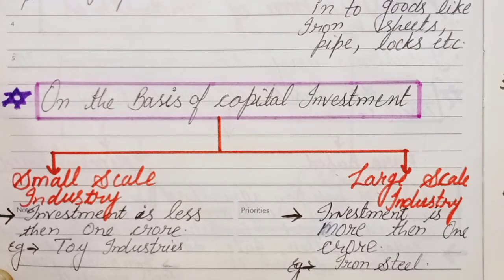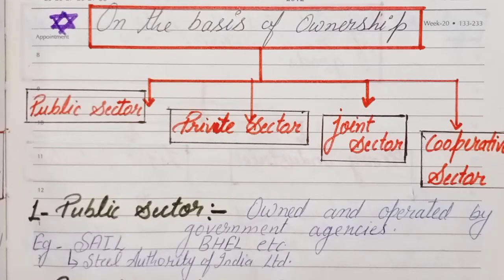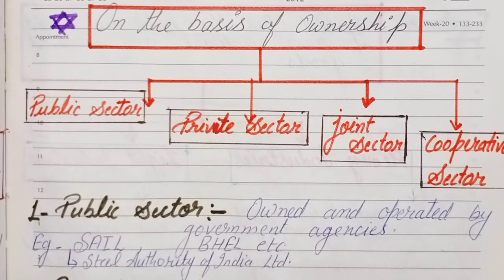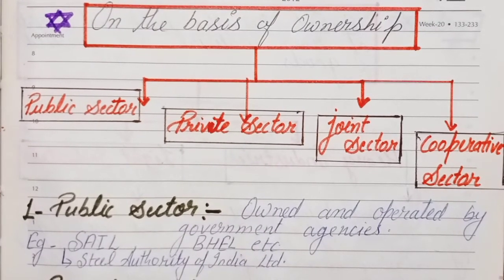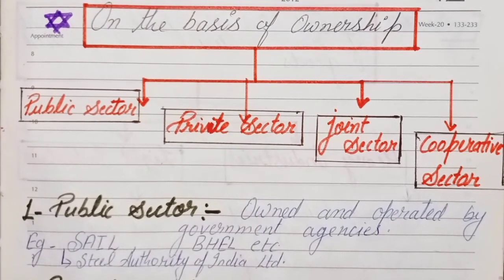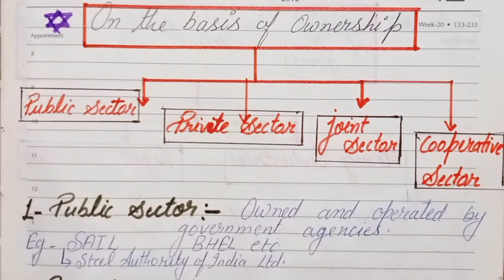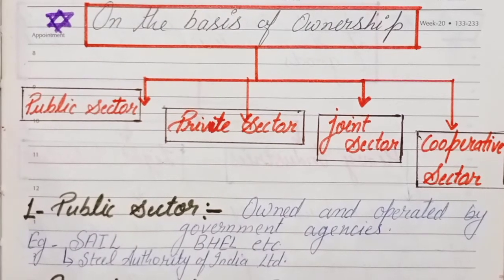Next is classification on the basis of ownership. On this basis, we divide industries into four categories: first is public sector industry, second is private sector industry, third is joint sector industry, and fourth is cooperative sector industry.